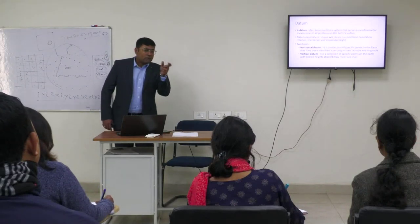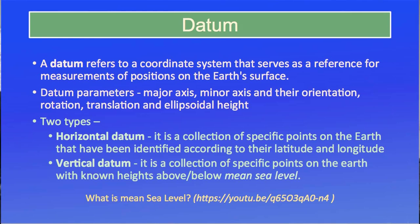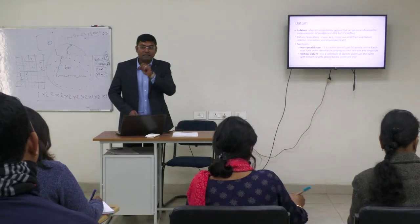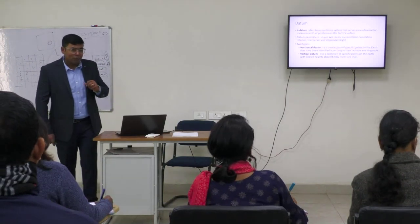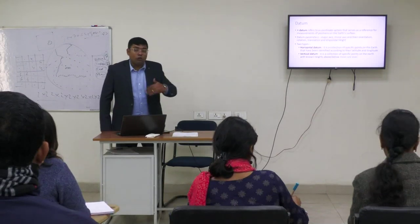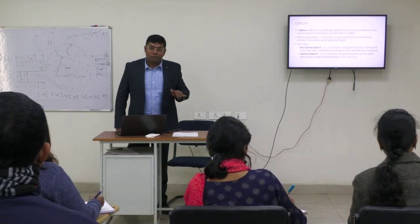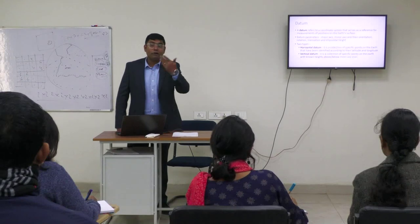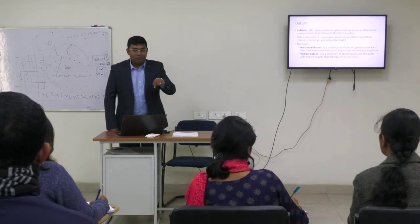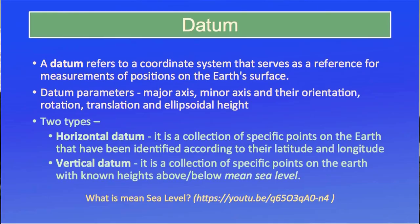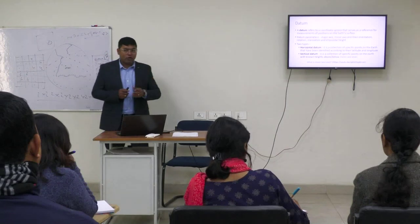The vertical datum is a collection of specific points on the Earth surface with their known heights above and below mean sea level. The concept of mean sea level is tricky. In coastal areas, tidal heights can define the mean sea level. But for areas with no sea, geodetic scientists have made an Earth model to get the mean sea level at any point on the Earth surface. I would request you to go through the provided YouTube video link for a detailed understanding of vertical datum.